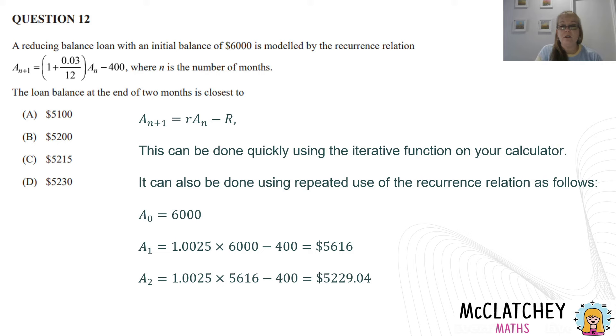Now I've got to do that one more time for the end of the second month. So I take this value from the previous answer, bring it down here, multiply that by the interest, take $400 for my repayment away, and I get $5,229.04. And once again, this is a closest to question. So we're looking at rounding. It's closest to, if I was to round that down, it'd be 5,229. However, that's not an option. It's closest to out of these four options, 5,230, which makes the answer D.